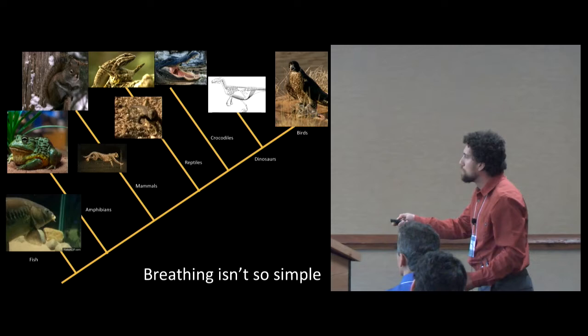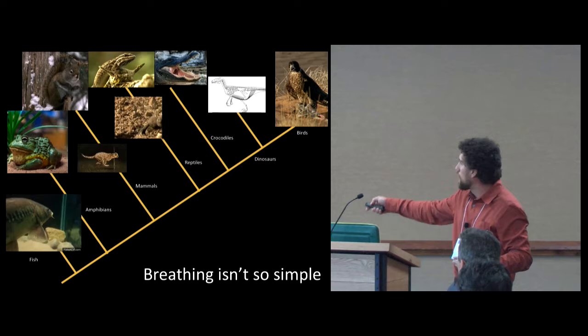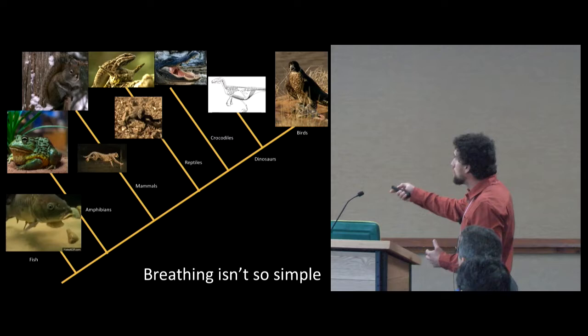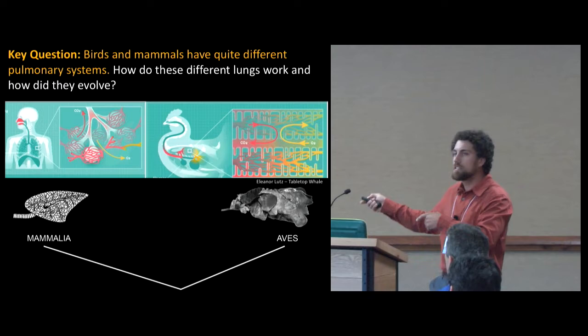To breathe, you expand your chest, your ribs go up and down, your diaphragm lowers, and it makes negative pressure. This is a latex cast of your lung where the red and blue indicate the blood vessels that have been injected with latex, and the white is the air spaces. Your lung expands and contracts, and that's how the air goes in and out. But if we look at the family tree of animals, breathing isn't quite so simple.